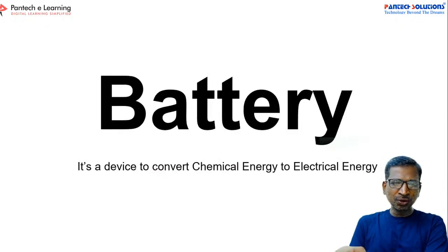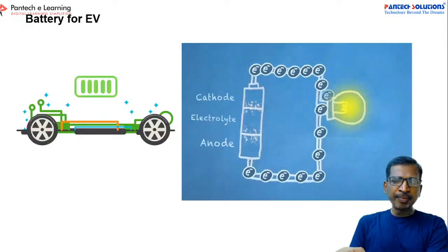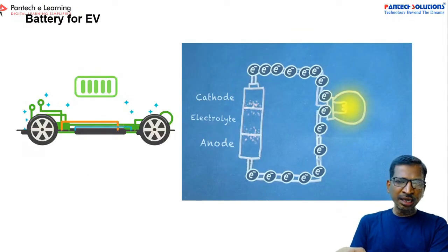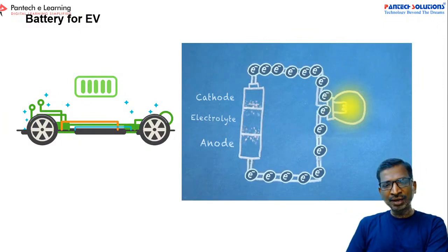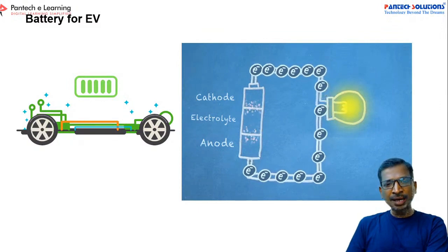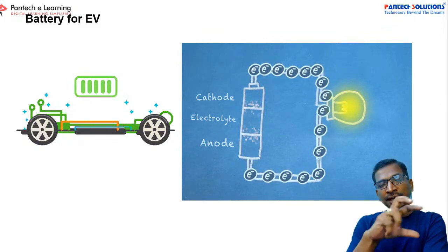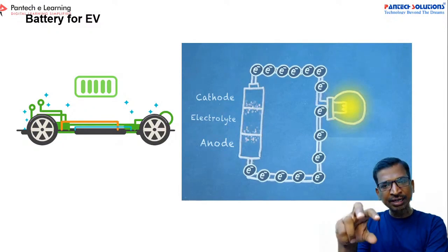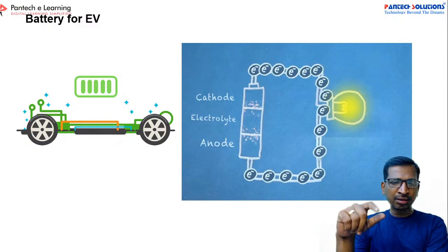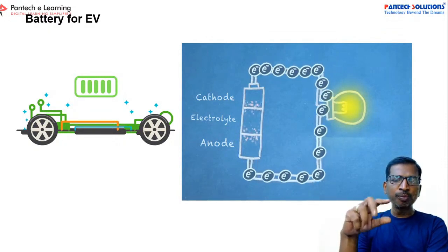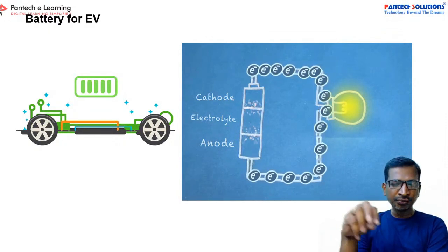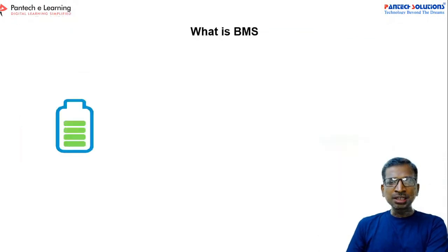As we know, a battery is a device to convert chemical energy into electrical energy. There are many types of batteries, and each one works based on chemical properties. Whenever you are charging or discharging the battery, there will be a flow of electrons, and inside the battery a chemical process happens. The speed of the chemical process depends on how much current is drawn or infused.